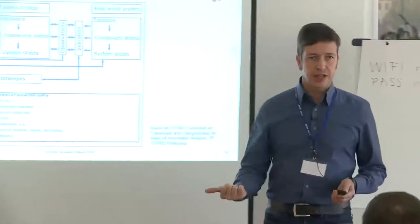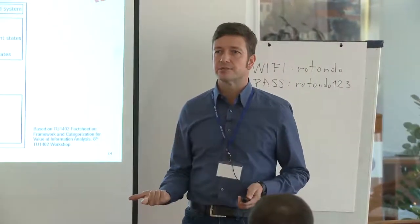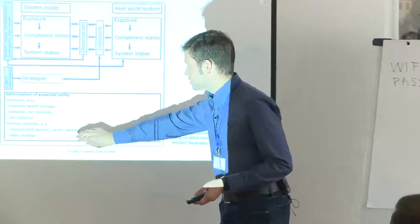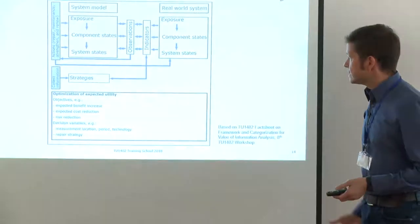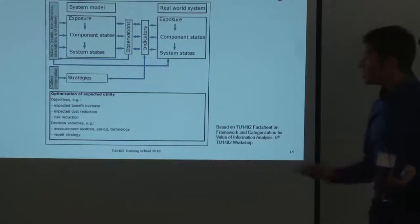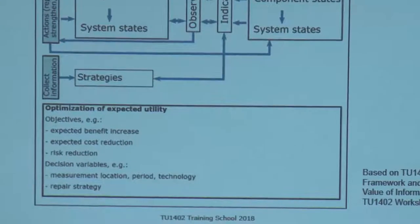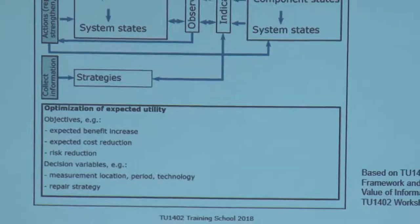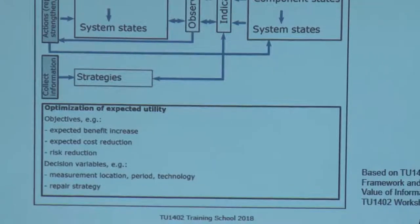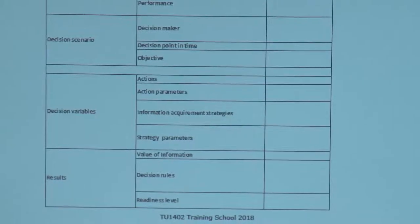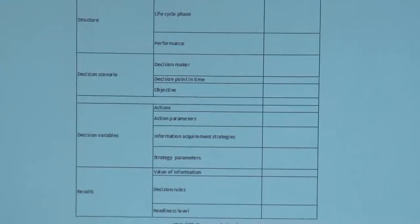Optimization requires an objective function and decision variables. In the context of structural health monitoring, the decision variables can be the measurement locations, measurement periods, and the technology. Another example is repair strategies — then we are going with the actions. There are several other ways of getting hold of the scenario for value of information and decision analysis.